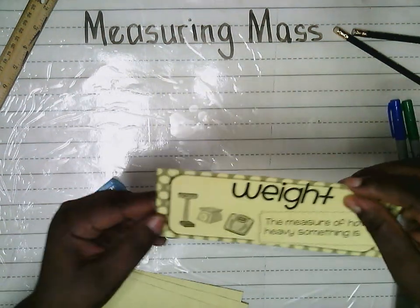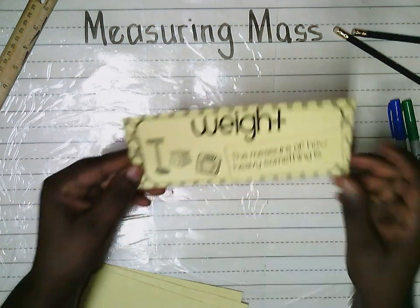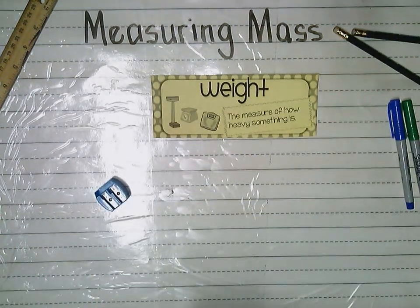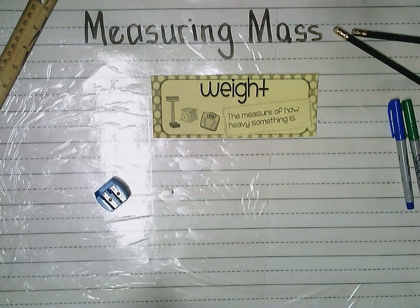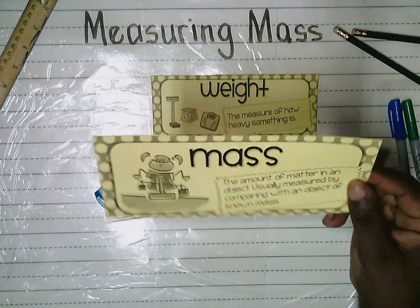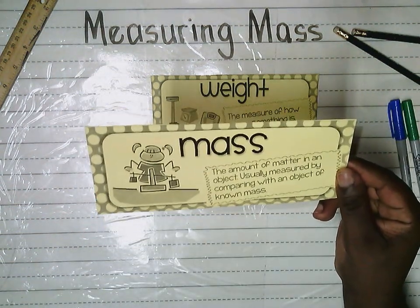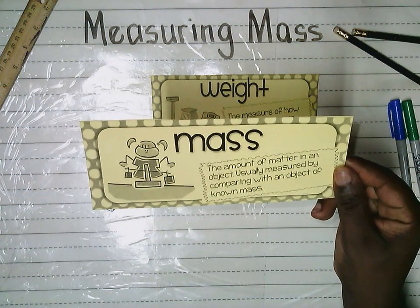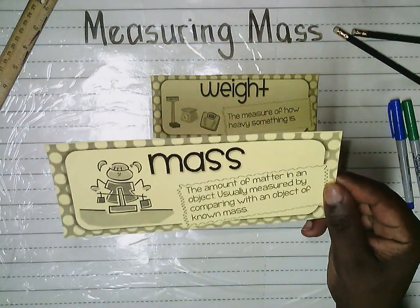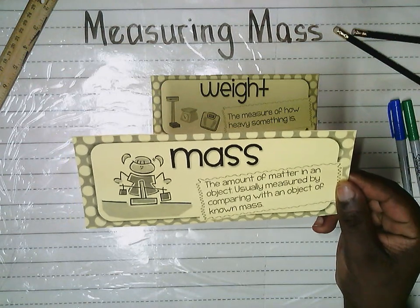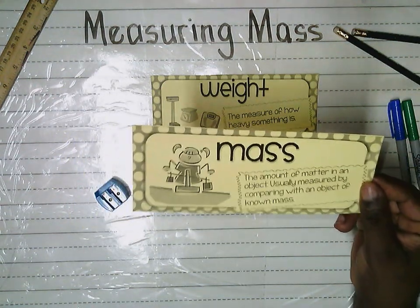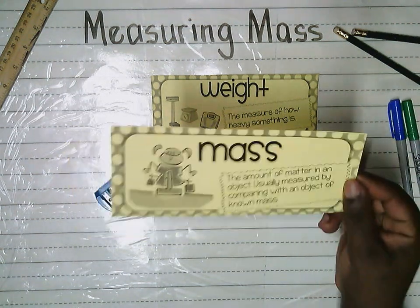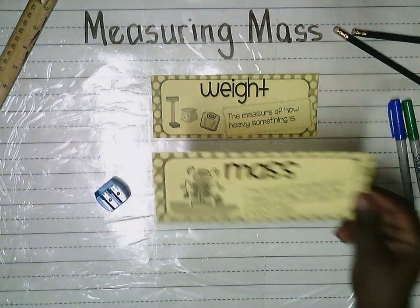You can see here there are different versions of scales in the picture. Another word that we're going to be looking at, and this is very important, is mass. Mass is the amount of matter in an object, usually measured by comparing with an object of known mass. So mass is how heavy something is, and you would know how heavy it is in comparison to another object.